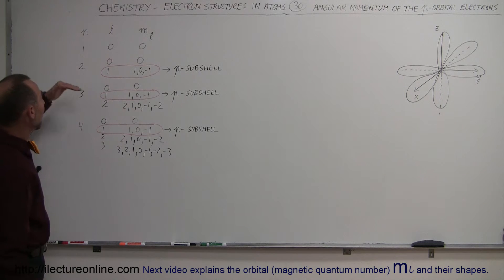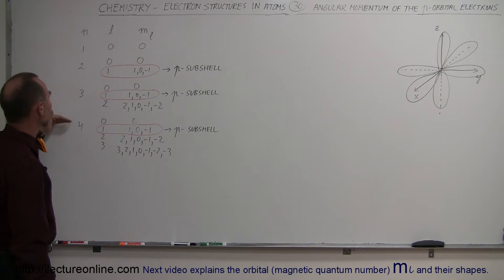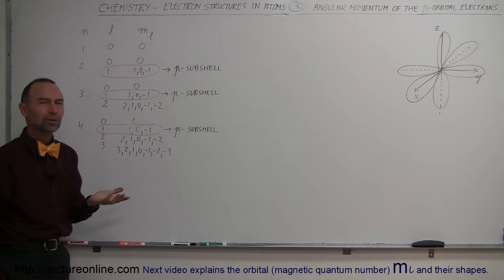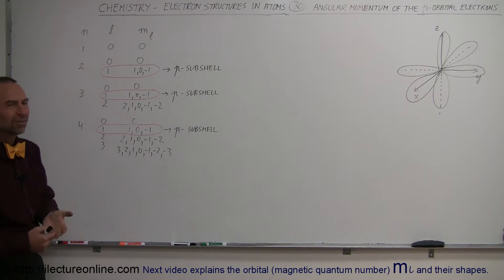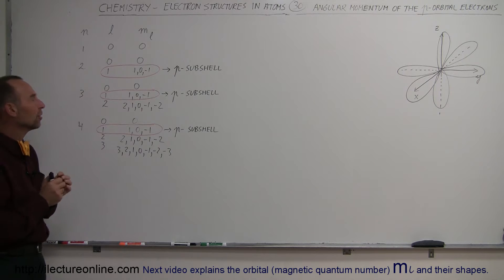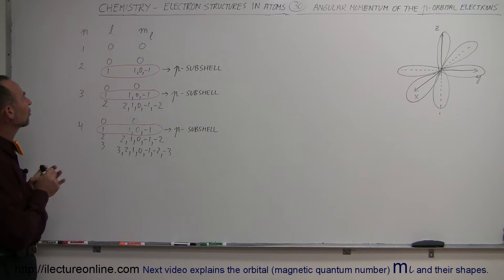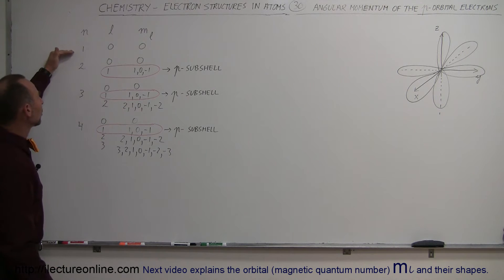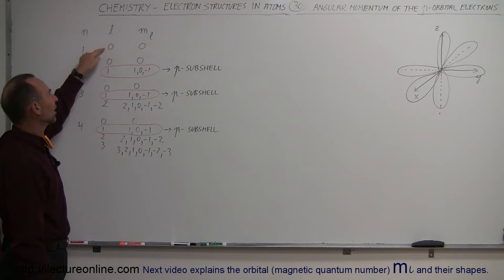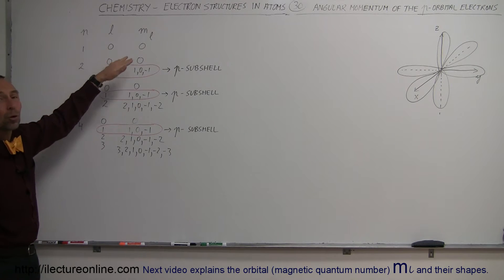It turns out that we have various energy levels around the nucleus of an atom. This is energy level 1, energy level 2, 3, and so forth. That's assigned by the principal quantum number. And then within each energy level, we have sub-levels. In the first energy level, we only have one sub-level, which corresponds to L equals 0, which means that is an s-orbital.